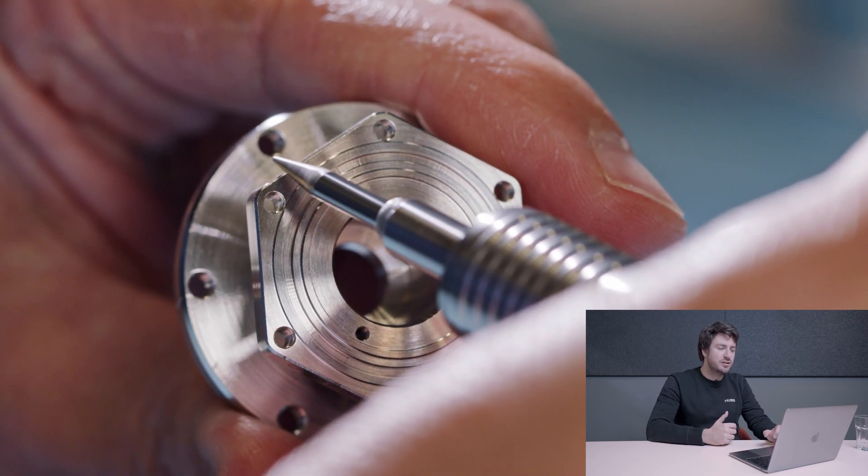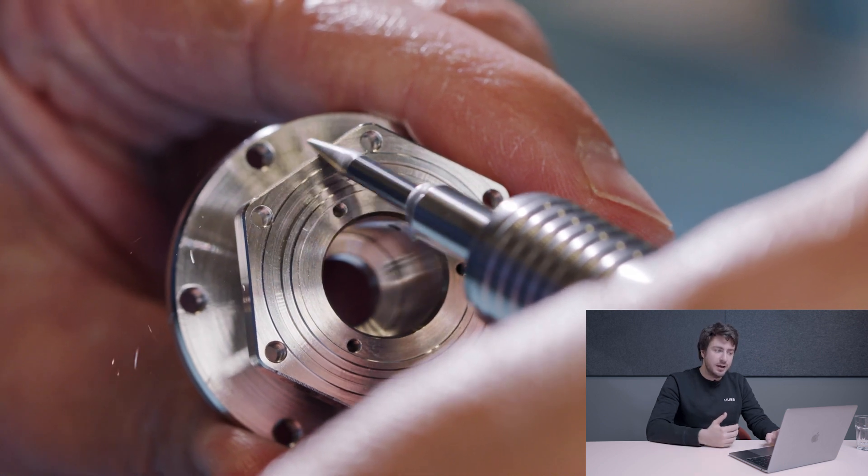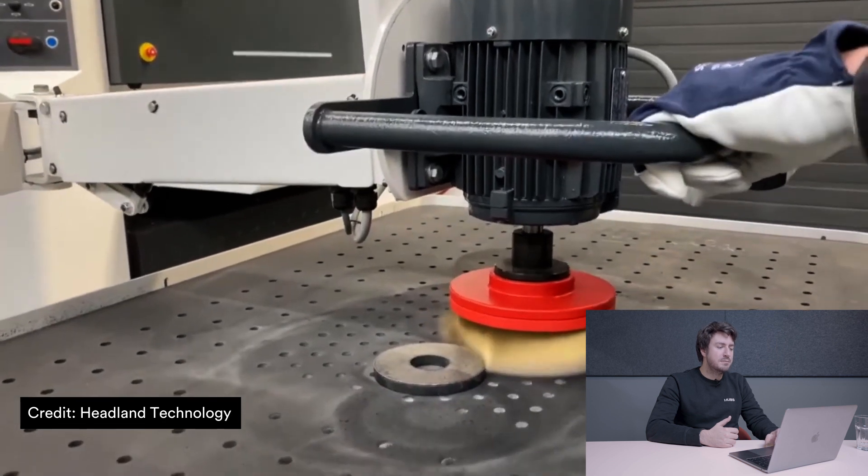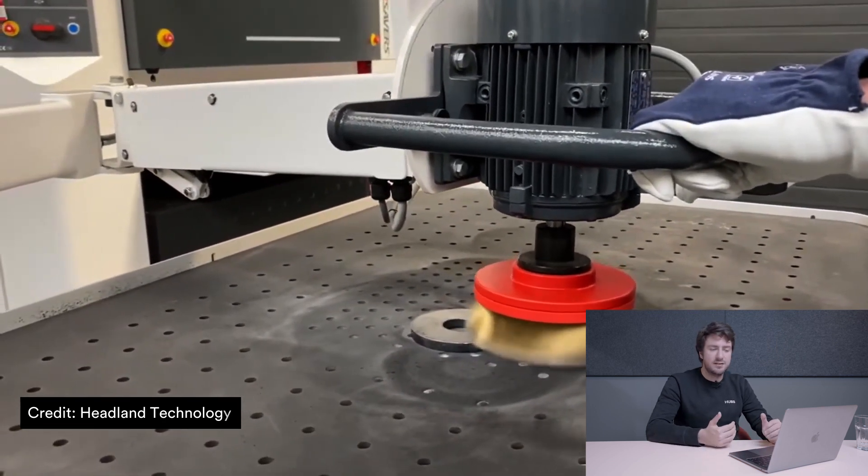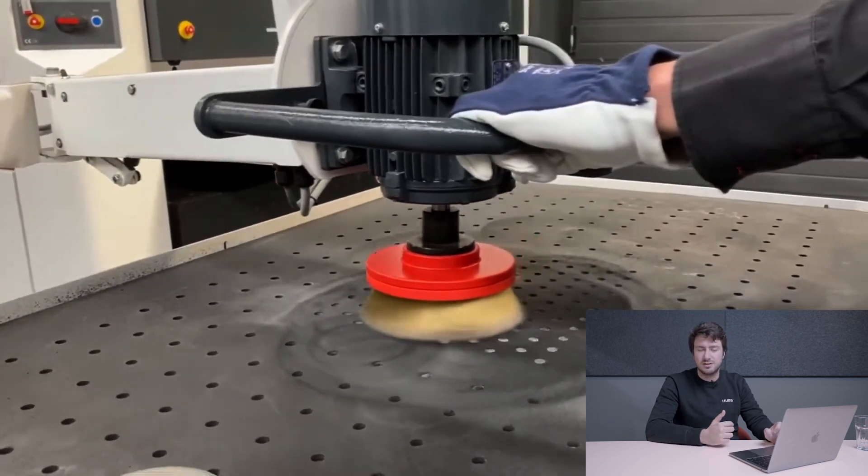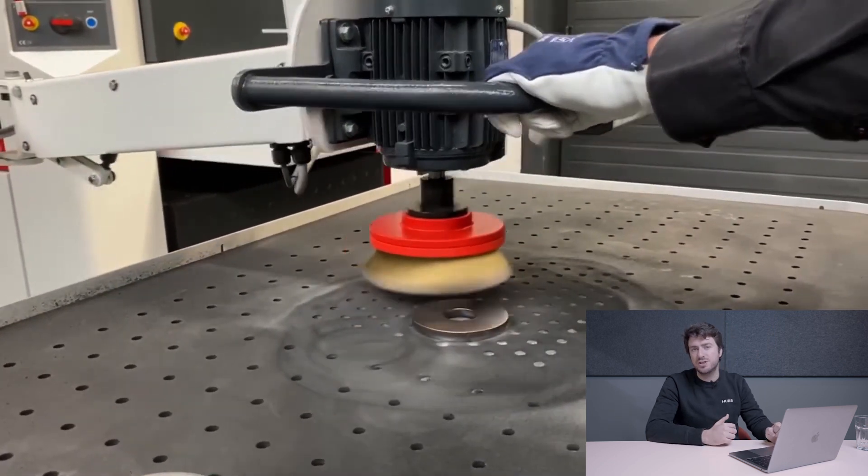The technician here is using a tool to manually scrape off the burr, which is cheap but more time consuming. On the other hand when we look at this mechanical deburring we see the deburring machine grinding the burr off. While it's more expensive than manual deburring it's more efficient so it's a more popular option in machining.